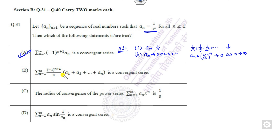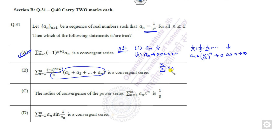Similarly, if you look at this series, it is again an alternating series. Our target is to verify the same properties. I can write the term A_N as 1 upon N, where A_N equals 1/3 raised to the power N, summed from 1 to infinity.